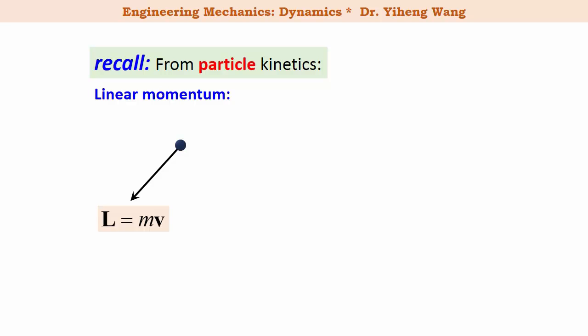If you recall from particle kinetics, the linear momentum L defined for a particle is simply its mass m multiplied by its linear velocity v. And since velocity is a vector, therefore the linear momentum is also a vector.